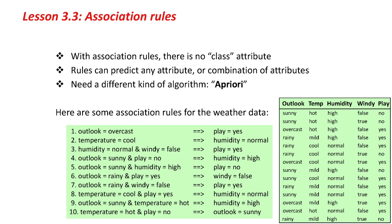The most popular association rule algorithm is called A Priori. I don't know if you remember the weather data from Data Mining with Weka — here's this little dataset with 14 instances and a few attributes.